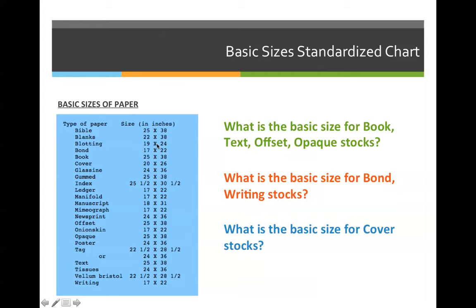This chart on the left-hand side is an example of what you might see in a textbook or in a paper catalog that will identify the basic size of different types of paper. This is a small sampling, but you can see how many different types of paper there are. I'd like you to take a minute to try to identify what the basic size for book, text, offset, and opaque are — they're all the same — what the basic size for bond or writing stocks is, and what the basic size for cover stocks is. Make sure you write them down somewhere in your notes so that you can keep them on your cheat sheet for exam number 3.